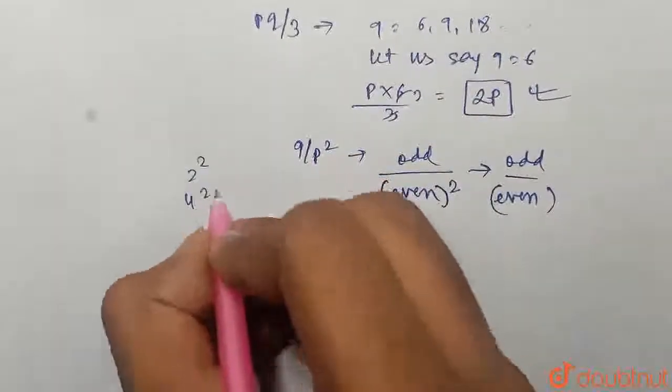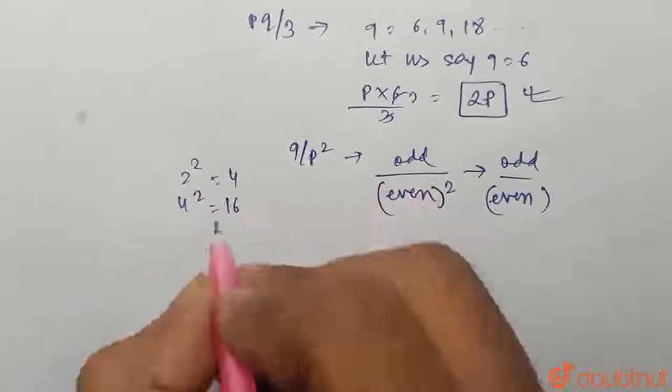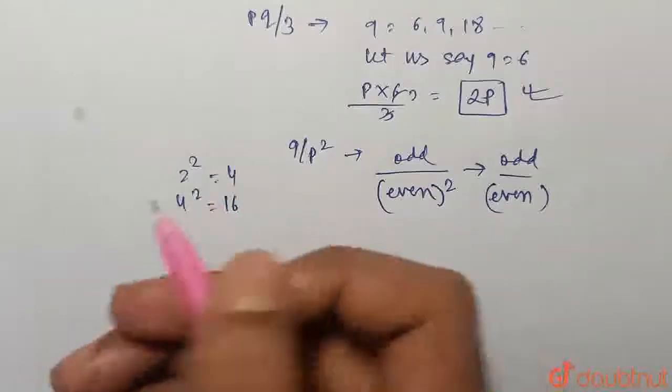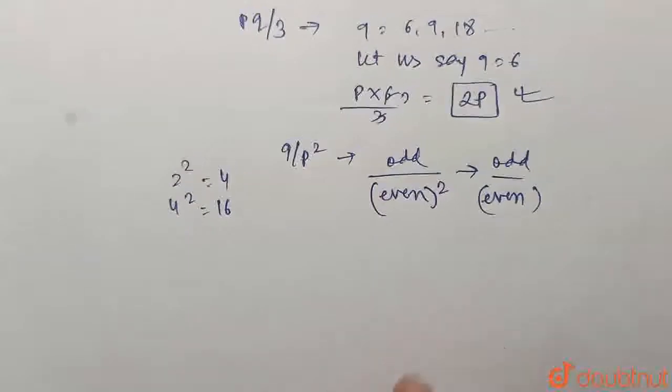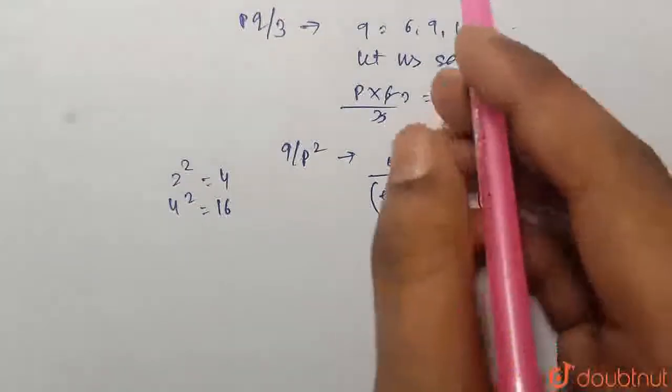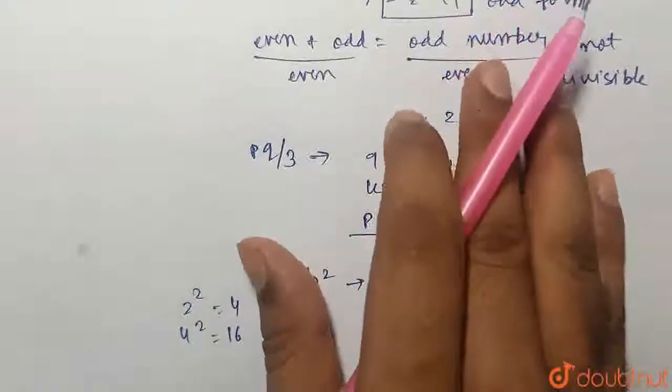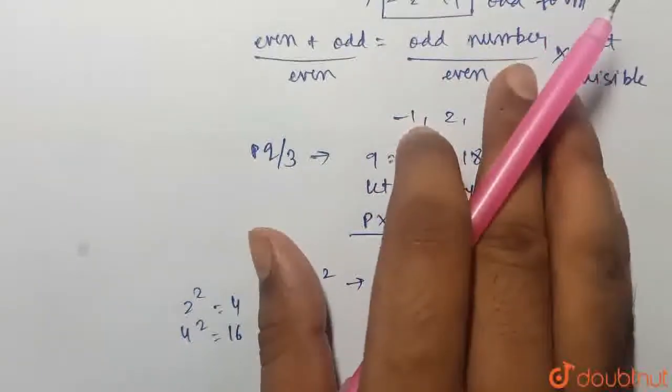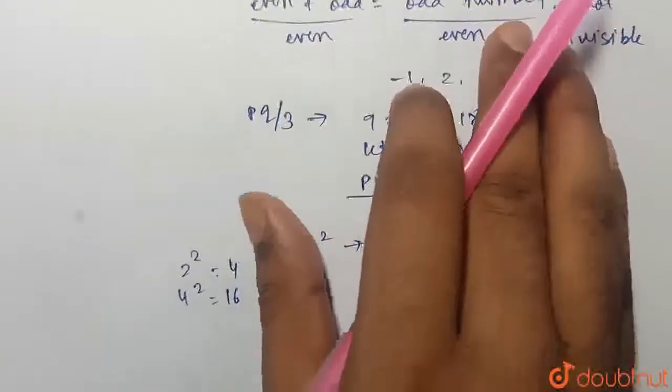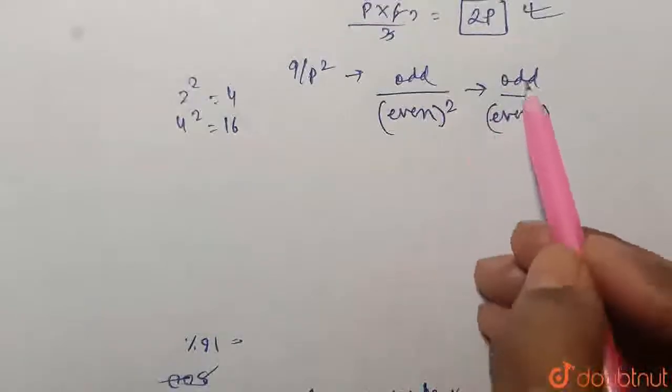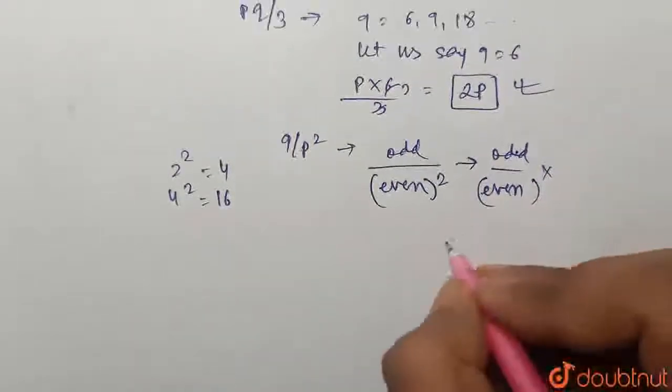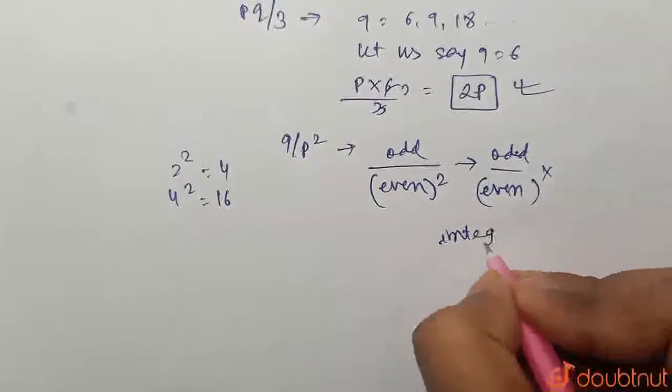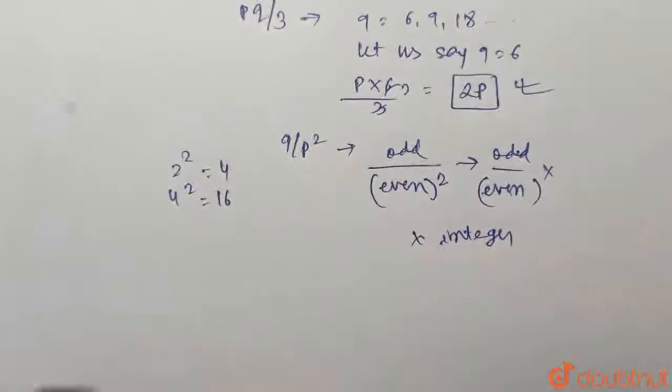Because if you take example of 2 squared, 4 squared, these are all even. 4 squared is 16. All the squares of even terms will always be even, because even is multiplied with even. And now, again, from the same logic as I used in the first case, that is odd upon even number cannot be divisible, it cannot be an integer. So, likewise, odd upon even cannot be an integer.